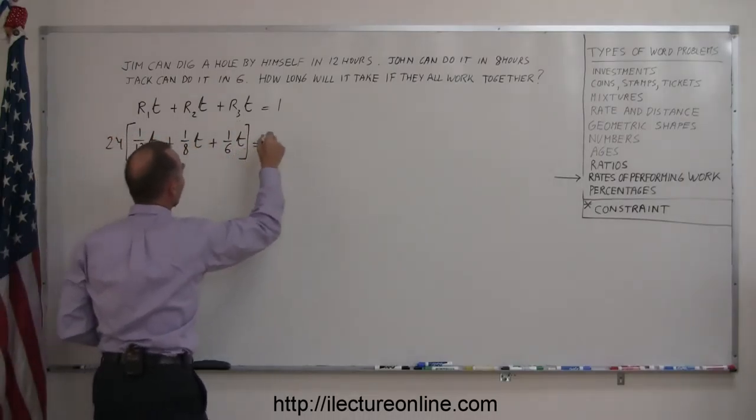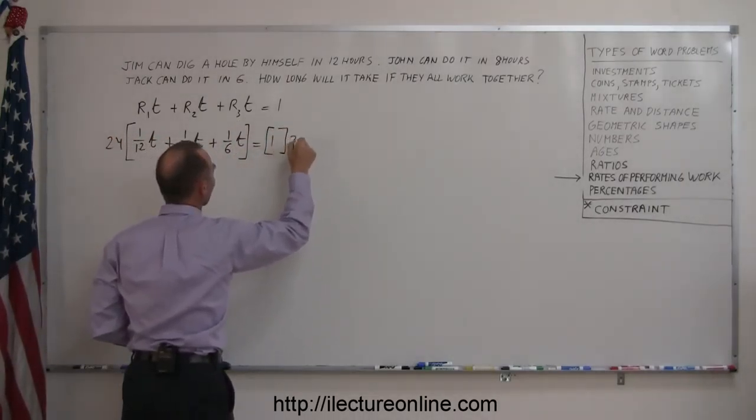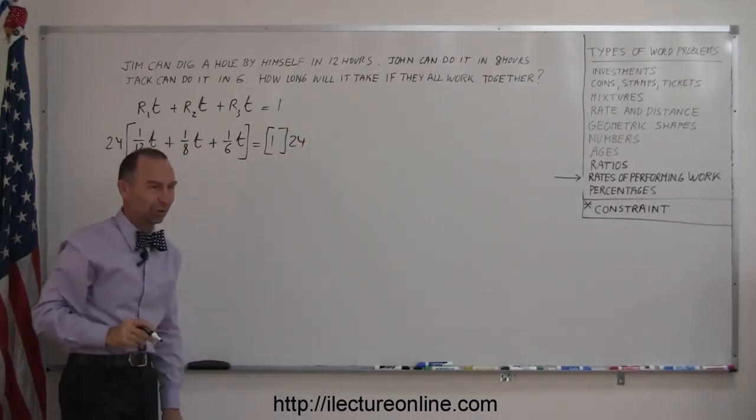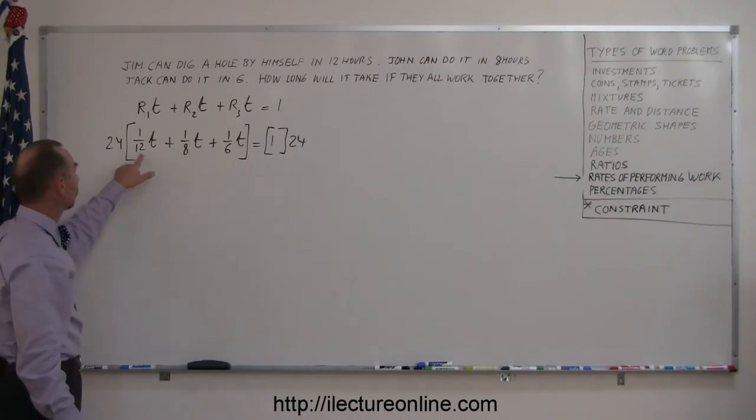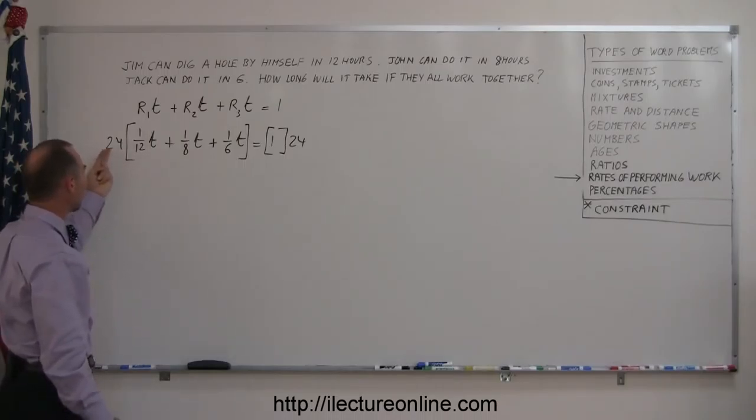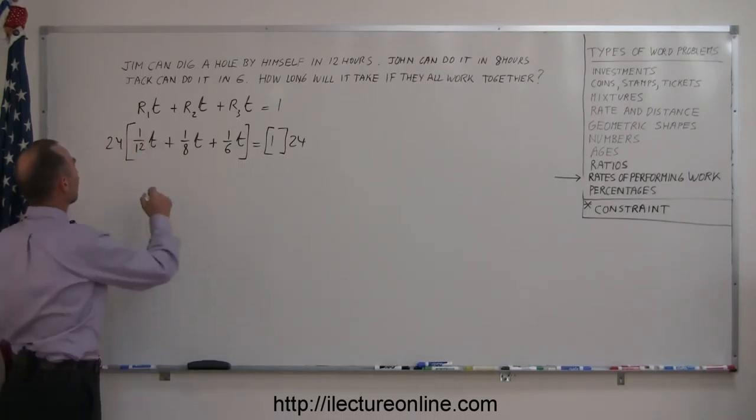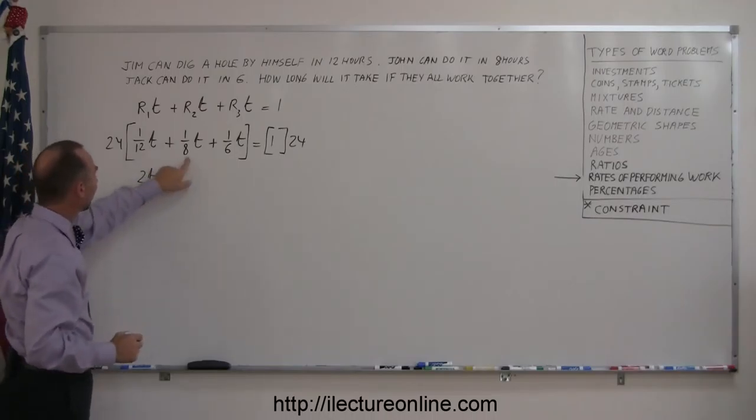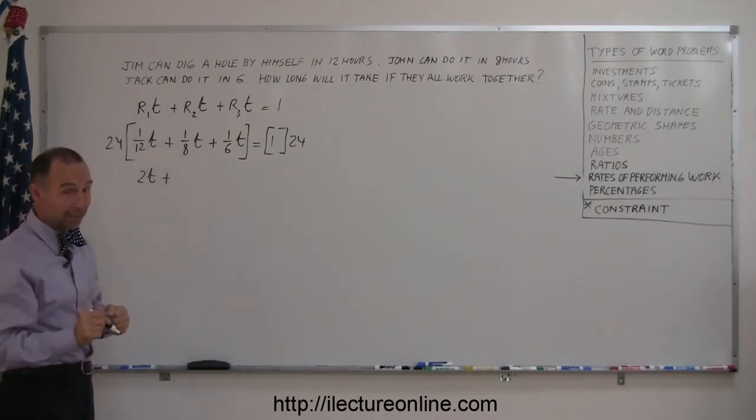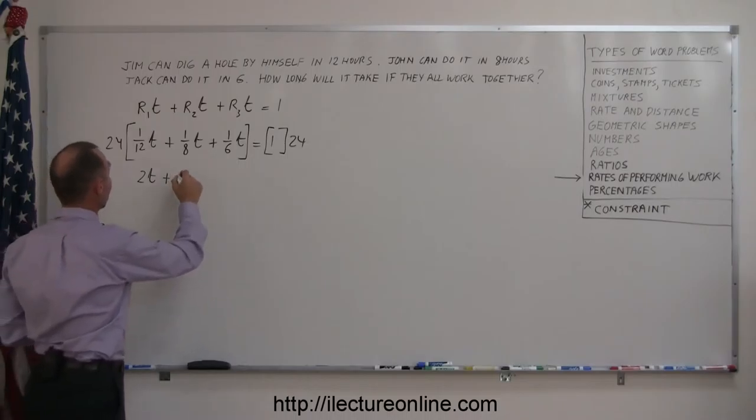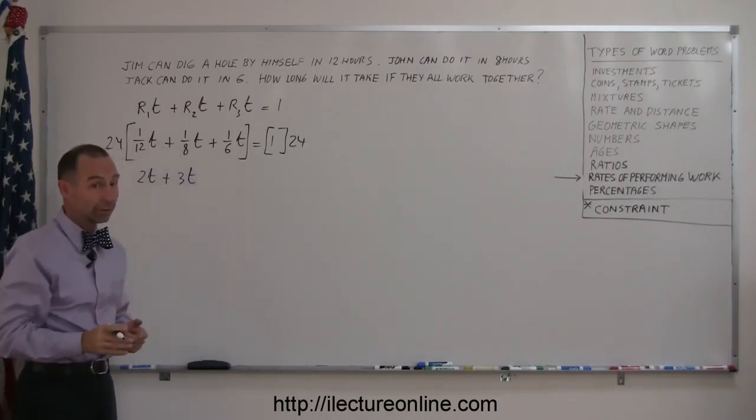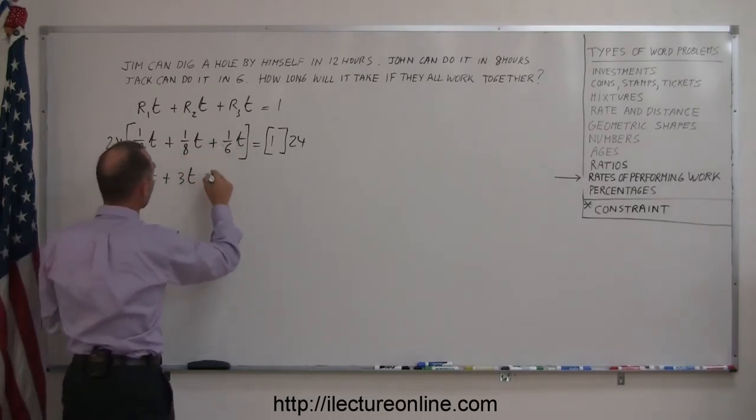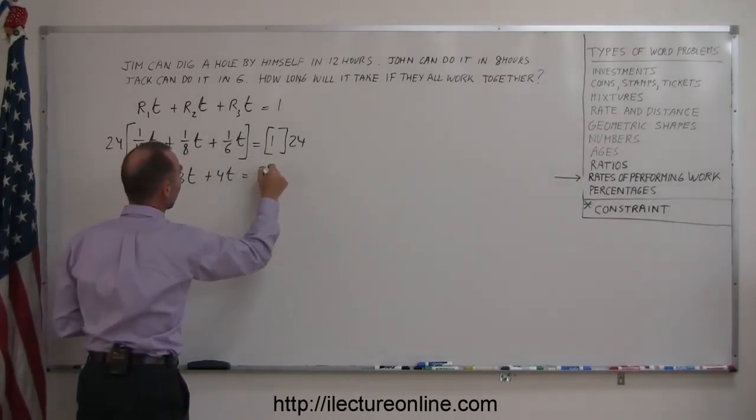So I'm going to multiply both sides of the equation by 24, and of course I do that to get rid of the fractions. You don't want any fractions in your equation. Now, since 12 goes into 24 exactly two times, then I get 2 times t, which gives me 2t, plus 8 goes into 24 exactly three times, so I multiply 3 times t, I get 3t, and 6 goes into 24 exactly 4 times, so I get 4 times t, equals 24 times 1, 24.